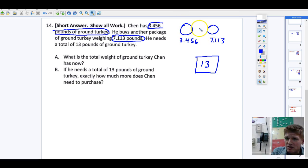To find out how much he has together total, we've got to add those together. So, 3.456 plus 7.113. Add those together. 6 plus 3 is 9, 5 plus 1 is 6, 4 plus 1 is 5. Line them up, bring your decimals down.